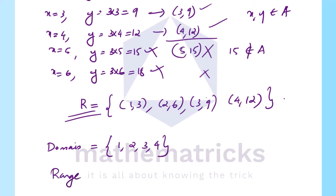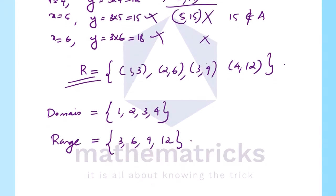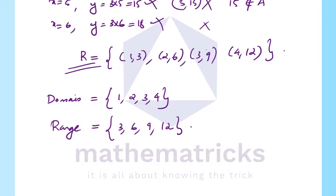The range is the set of all second elements of the ordered pairs. The second elements are 3, 6, 9, 12. So range equals {3, 6, 9, 12}. The co-domain is the entire set A.